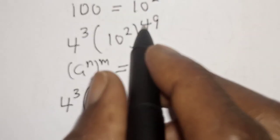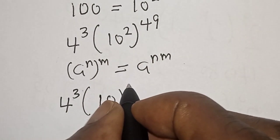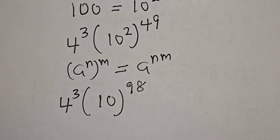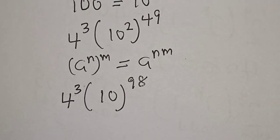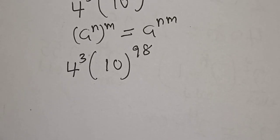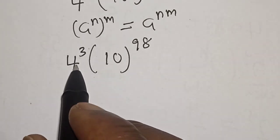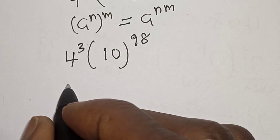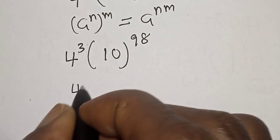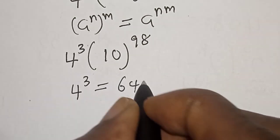...49 times 2, that is 98. So we have 4 raised to power 3 multiplied by 10 raised to power 98. Now, 4 raised to power 3 is 4 times 4 times 4, that is 64. So 4 raised to power 3 is equal to 64.